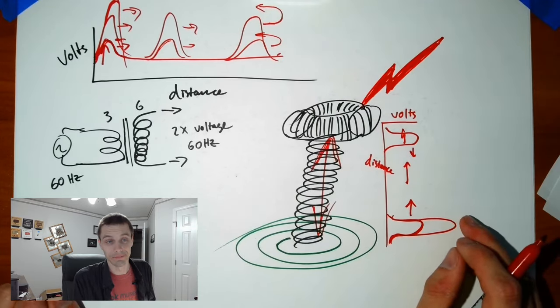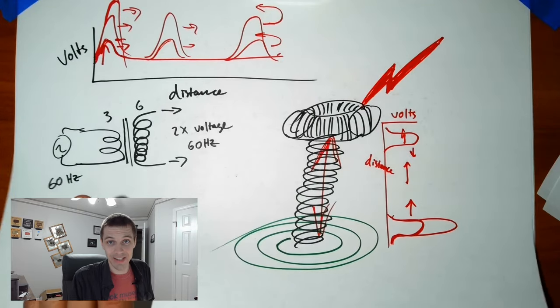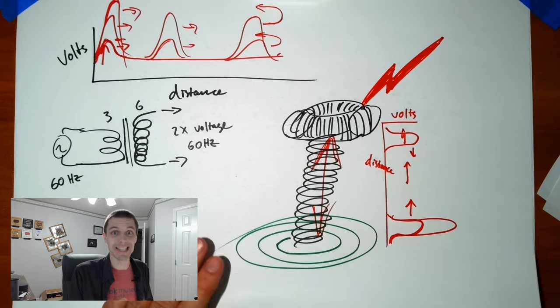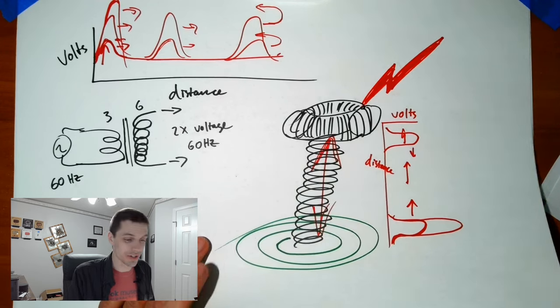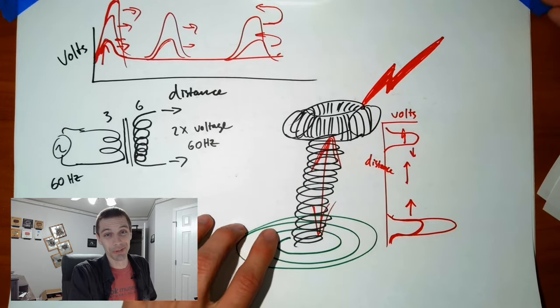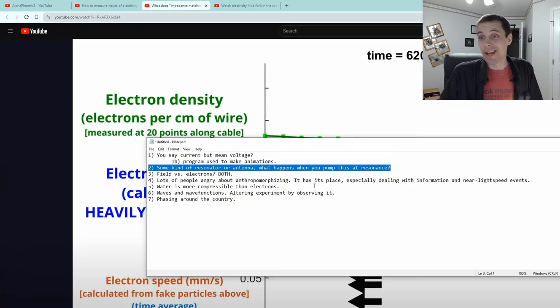If anybody has a Tesla coil and an oscilloscope and actually wants to do this, please send me the footage — I'm realistically not going to get to that project but I still really want to see it. Next question on the list: fields versus electrons.